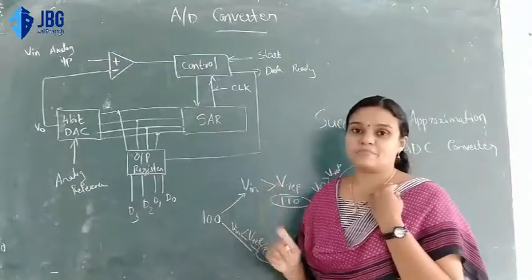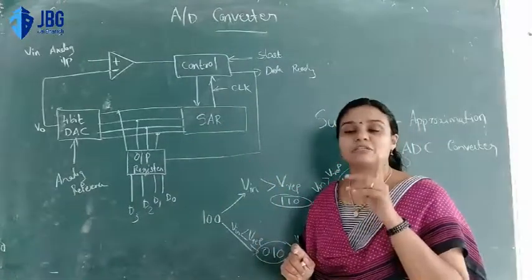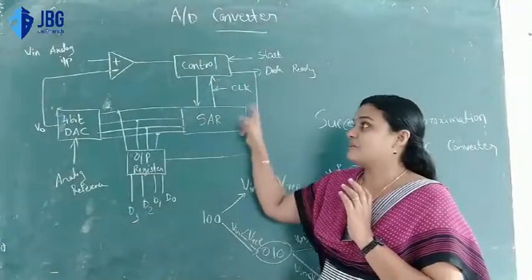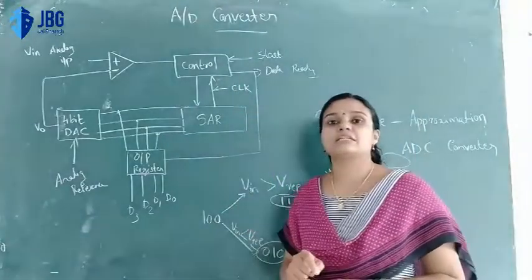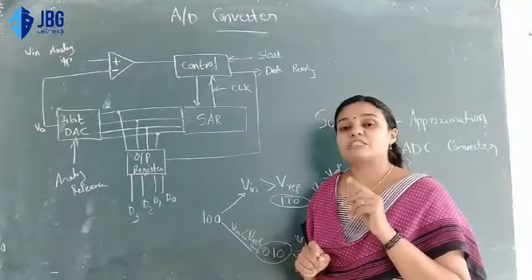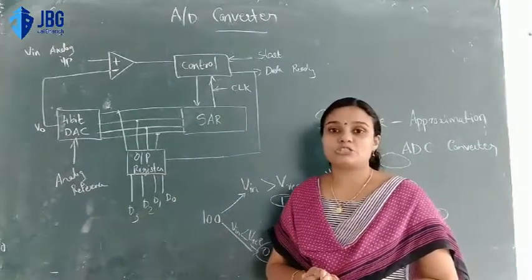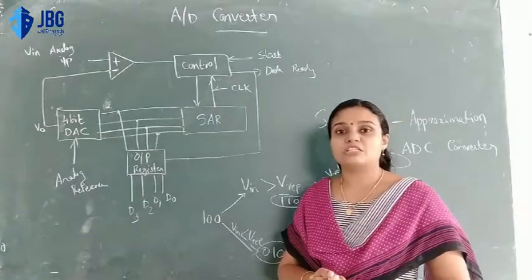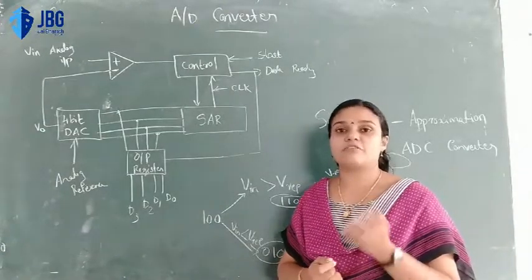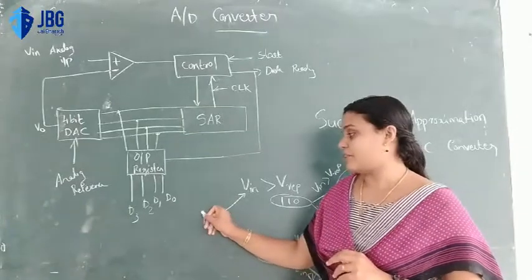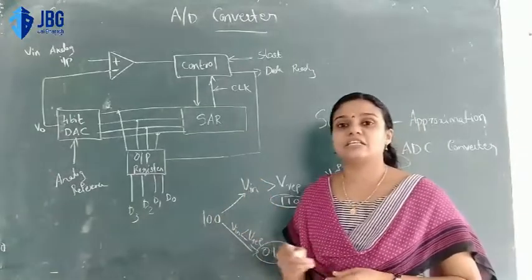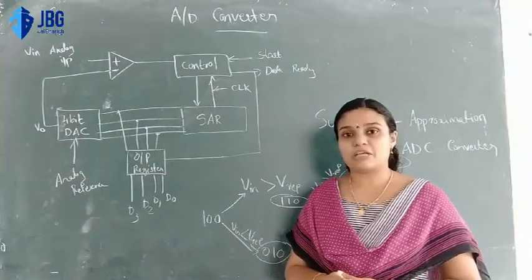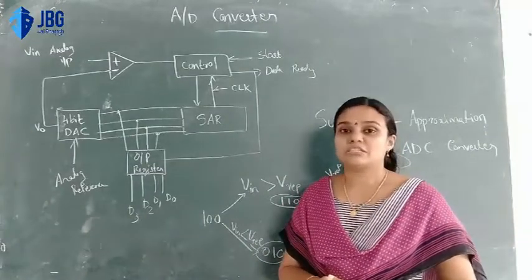Now the MSB feature is set first. This is the MSB - most significant bit feature. The most significant bit is set to 1 and the system is on.